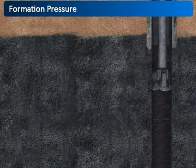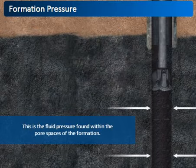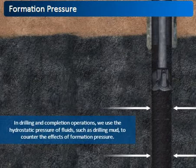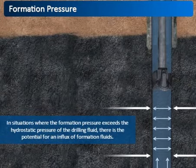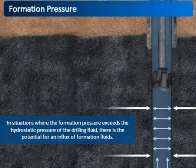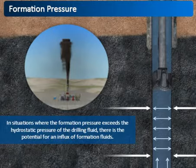Another form of applied pressure we see is formation pressure. This is the fluid pressure found within the pore spaces of the formation. Formation pressure can force fluids into the wellbore. In drilling and completion operations, we use the hydrostatic pressure of fluids such as drilling mud to counter the effects of formation pressure and keep the wellbore contained and controlled. In situations where the formation pressure exceeds the hydrostatic pressure of the drilling fluid, there is the potential for an influx of formation fluids resulting in a well kick and even a blowout.